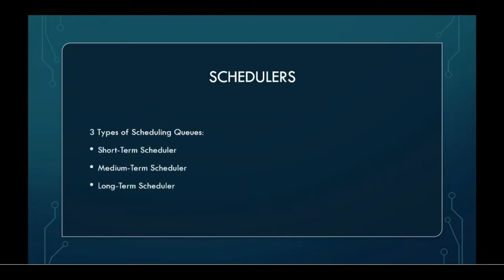There are three types of schedulers: short-term scheduler, medium-term or mid-term scheduler, and long-term scheduler. Short-term scheduler aims to improve system performance in accordance with chosen criteria; it changes a process from ready state to running state. Mid-term scheduler is a part of swapping and removes processes from memory. Long-term scheduler determines which programs are admitted to the system for processing.